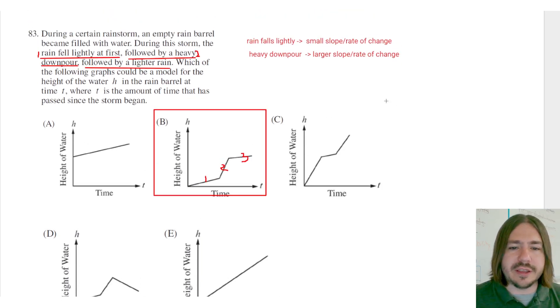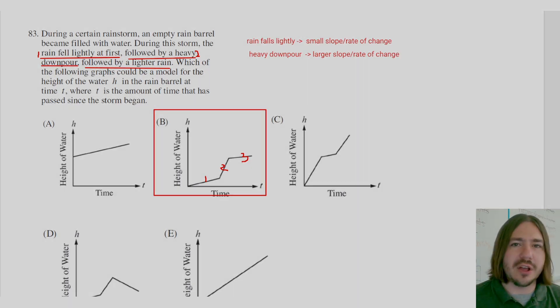So there's not really any arithmetic or algebra here. It's just really about interpreting this graph in terms of the description that's given in the problem. So our answer is B here. And that's it for number 83. Thanks for watching. Y'all have a great day.